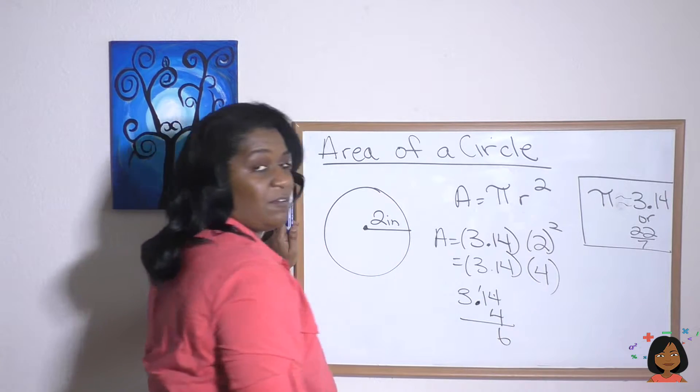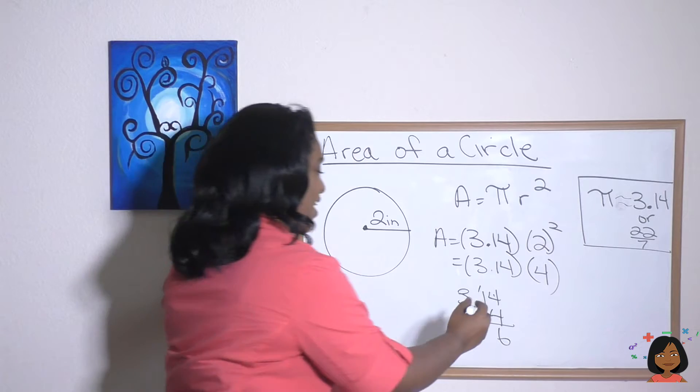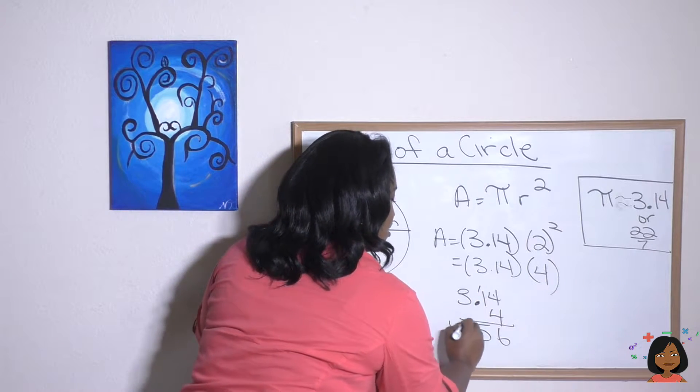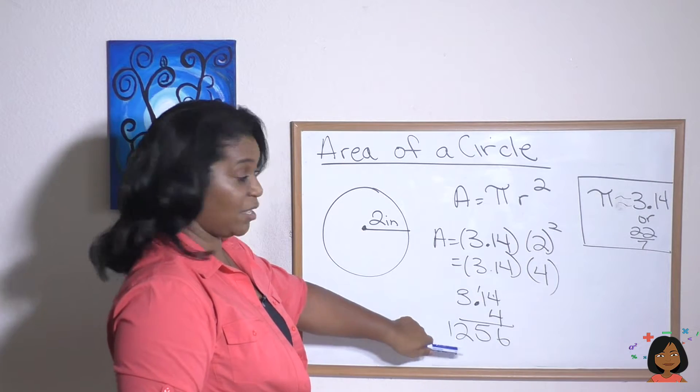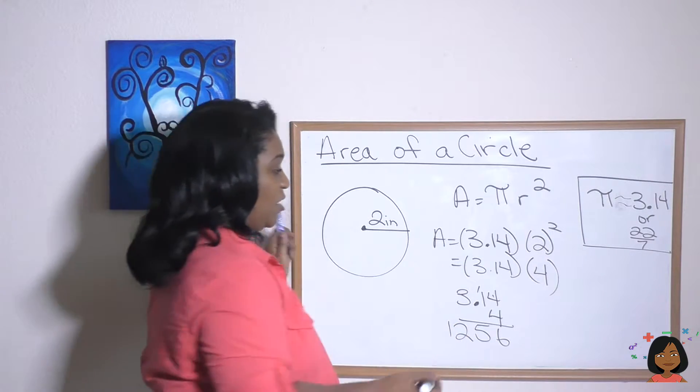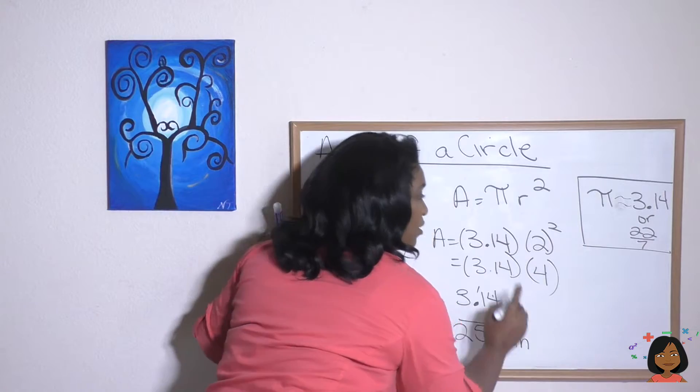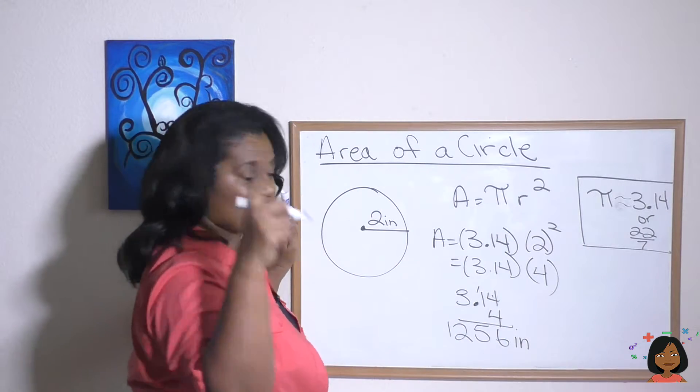Four times four is 16. Four times one is four, plus one is five. And four times three is 12. So we're not done. 1,256 inches. And again, whenever we're dealing with area, we're going to put in a squared.